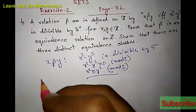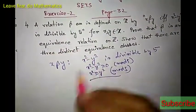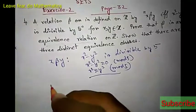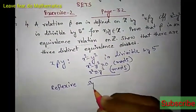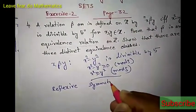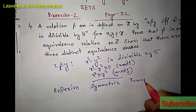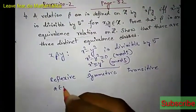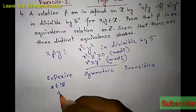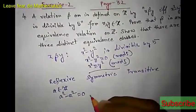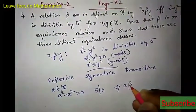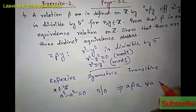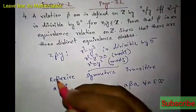We have to show that this is an equivalence relation. To show equivalence, we have to show it is reflexive, symmetric, and transitive. For reflexivity: let a be an integer. Then a squared minus a squared equals 0, and 5 divides 0. So a is related to a for all a belonging to Z. Yes, it is reflexive.